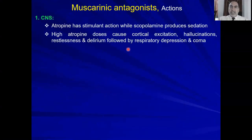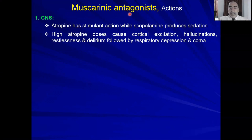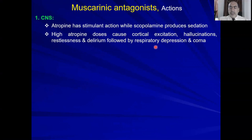The pharmacological actions of muscarinic antagonists: on the CNS level, we have atropine and scopolamine (hyoscine). Even though both are muscarinic antagonists, atropine has a stimulant action on the CNS but only in high doses, while scopolamine at therapeutic doses acts as a depressant and produces sedation. Atropine in high doses can cause cortical excitation, hallucination, restlessness, and delirium, followed by respiratory depression and coma.